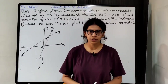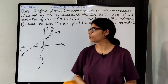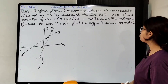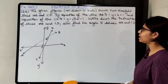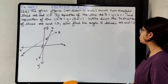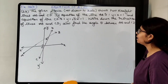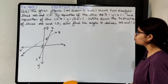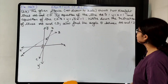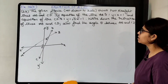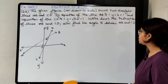Starting with question number 23. The given figure, not drawn to scale, shows two straight lines AB and CD. The equation of line AB is y = x + 1 and the equation of line CD is y = √3x − 1. Write down the inclination of lines AB and CD. Also find the angle theta between AB and CD.